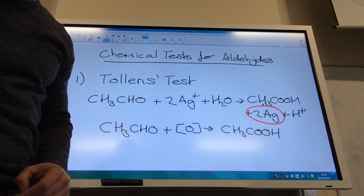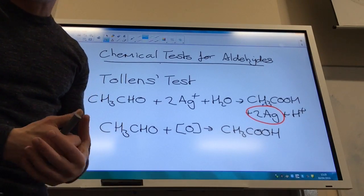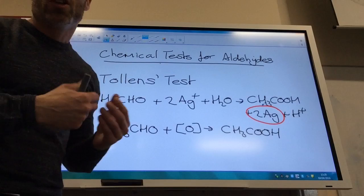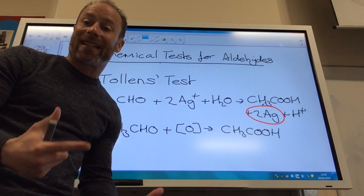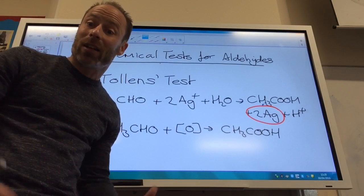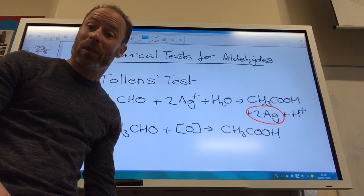You need to know the conditions. So you use a silver nitrate solution with ammonia in. You warm it up, get a silver mirror if it's an aldehyde. You won't see it if it's a ketone. Why not? Because ketones won't be oxidized, will they?